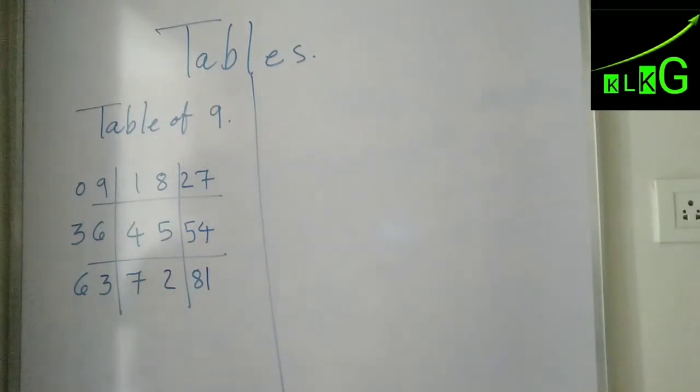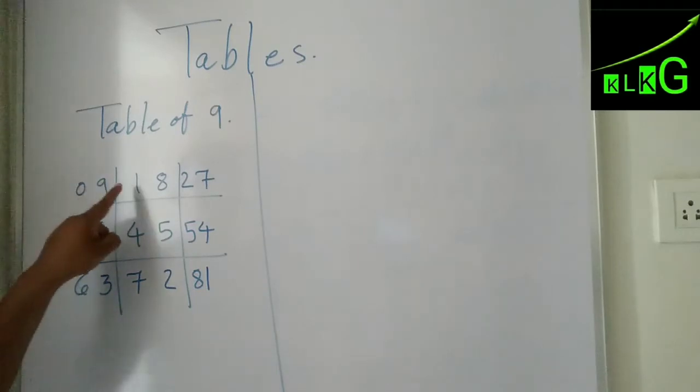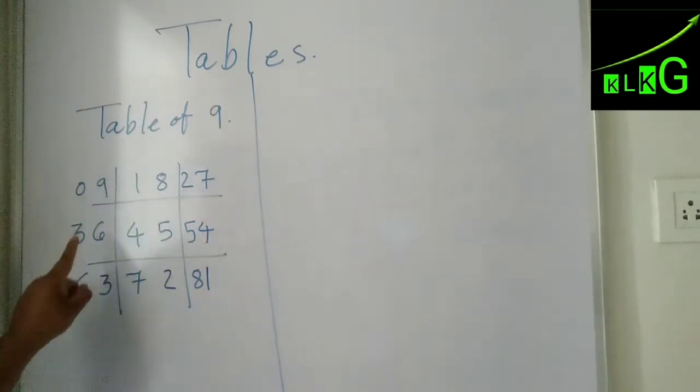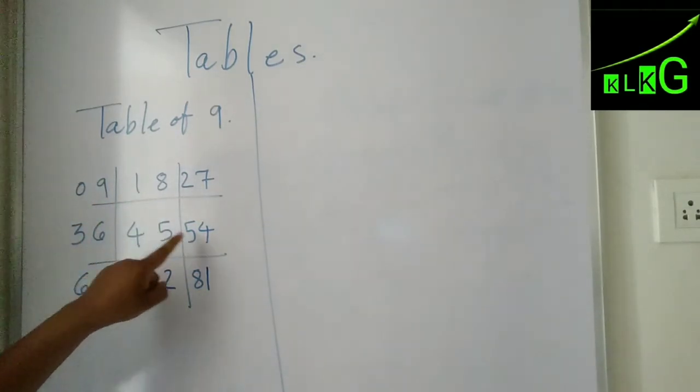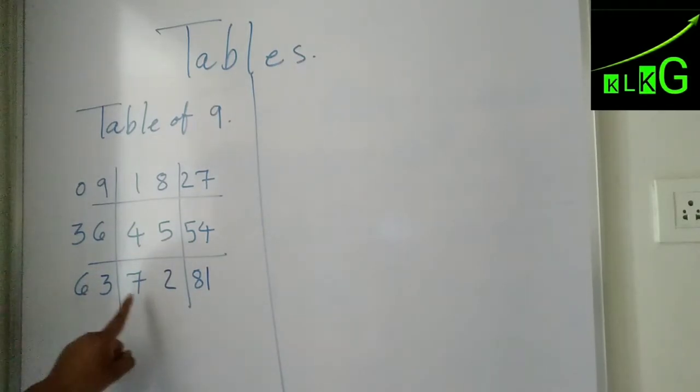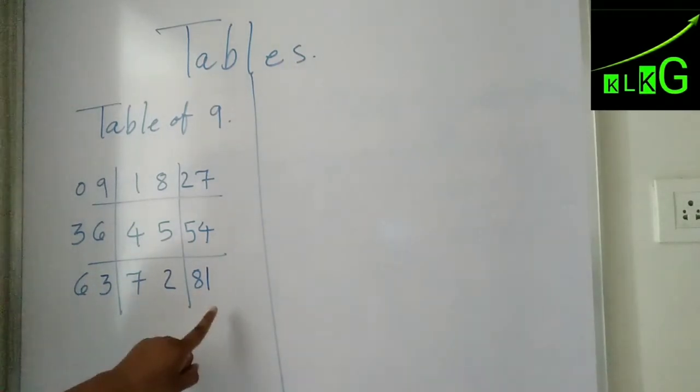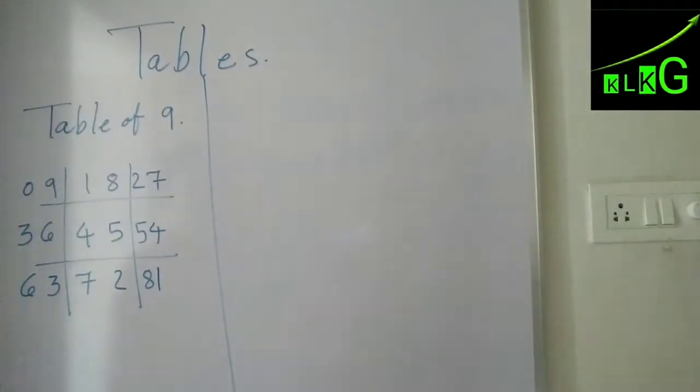This becomes your table of 9: 9 ones are 9, 9 twos are 18, 9 threes are 27, 9 fours are 36, 9 fives are 45, 9 sixes are 54, 9 sevens are 63, 9 eights are 72, 9 nines are 81, and 9 tens are 90. Now let us talk about the table of 19.